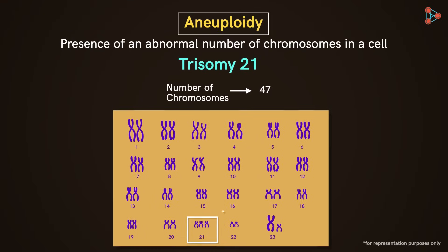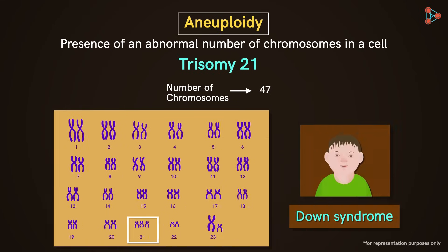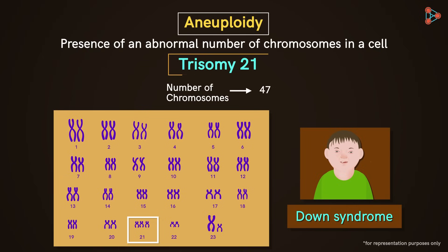Trisomy 21 is so named because there are three chromosomes instead of two in the 21st set. This problem leads to a condition called Down syndrome. We will get into the details of these disorders in higher grades, but for now let's focus on understanding chromosomal mutations.